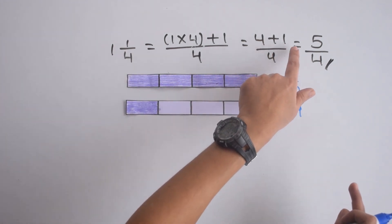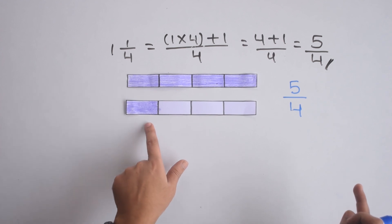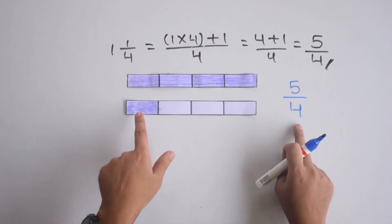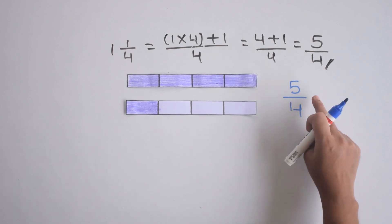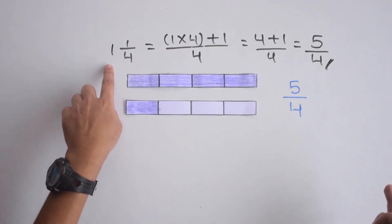Adding it to the 4, we get 5 colored parts. The number of parts in one fraction remains the same, which is 4. So we get 5/4 when converting 1 1/4.